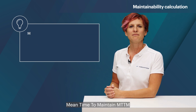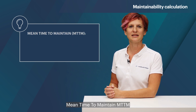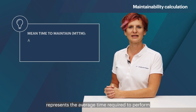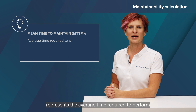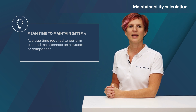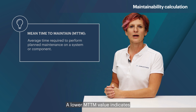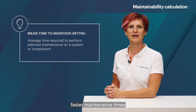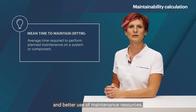Mean Time to Maintain, MTTM, represents the average time required to perform planned maintenance on a system or component. A lower MTTM value indicates faster maintenance times and better use of maintenance resources.